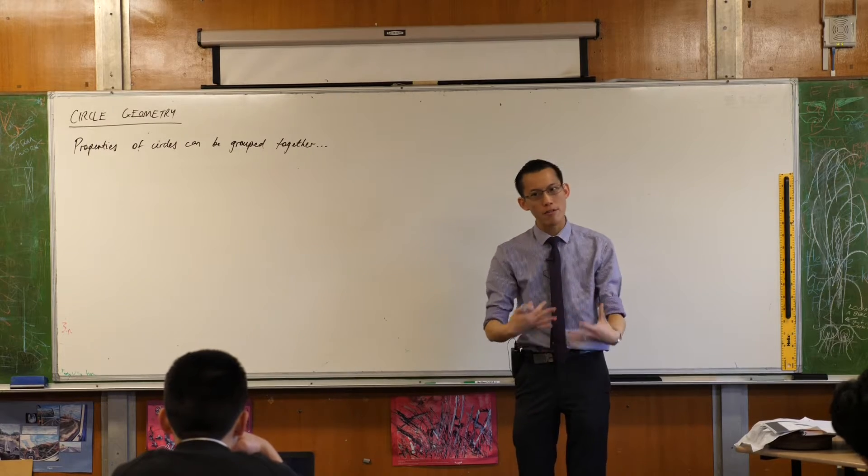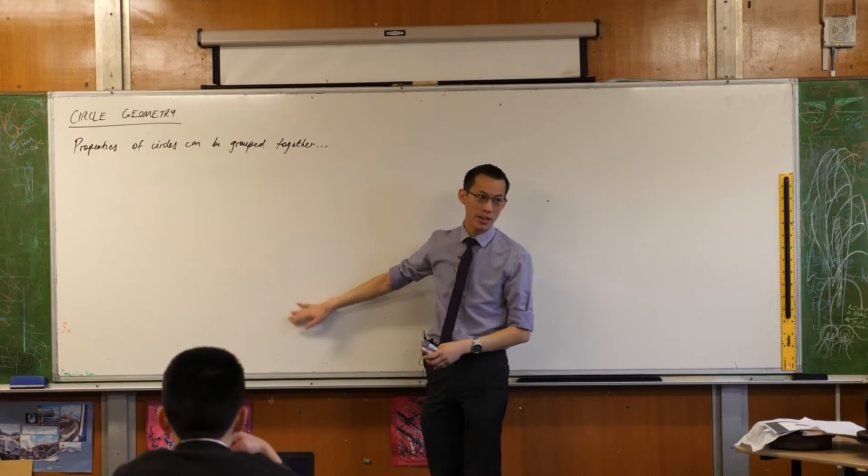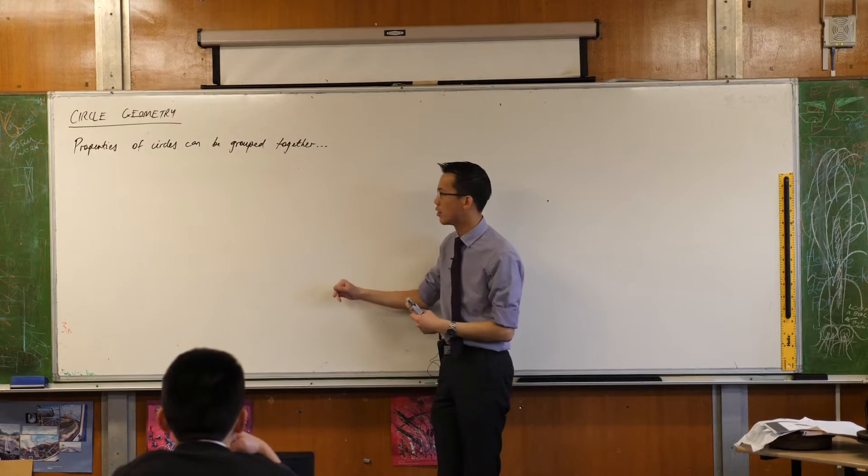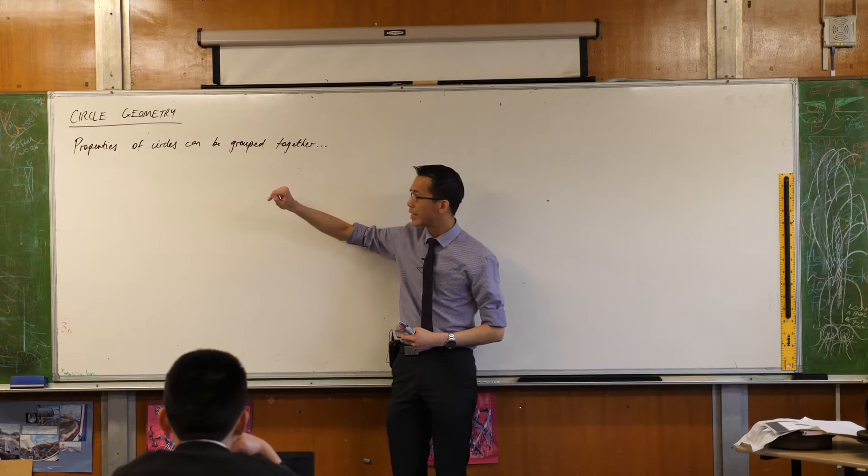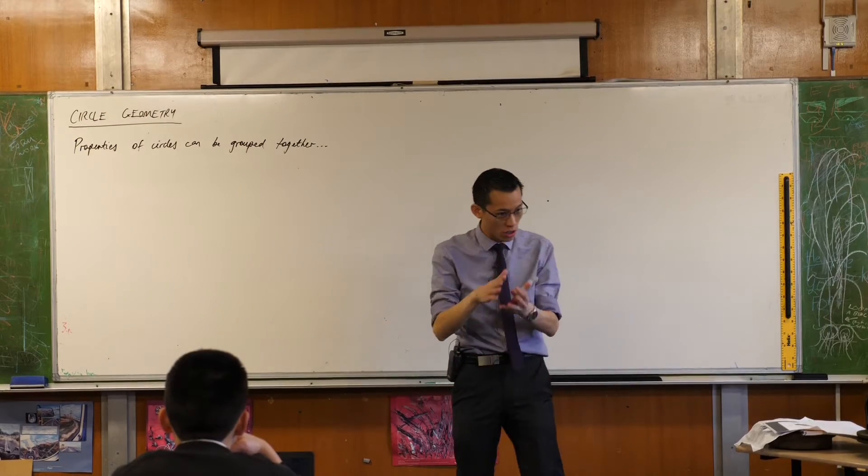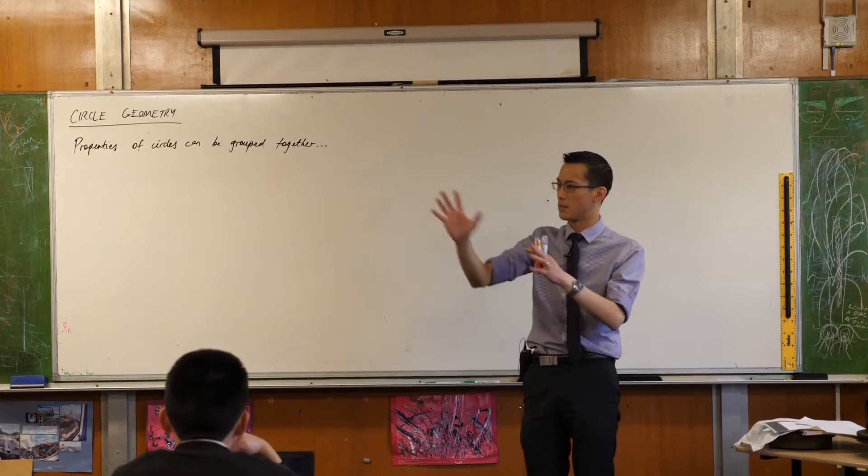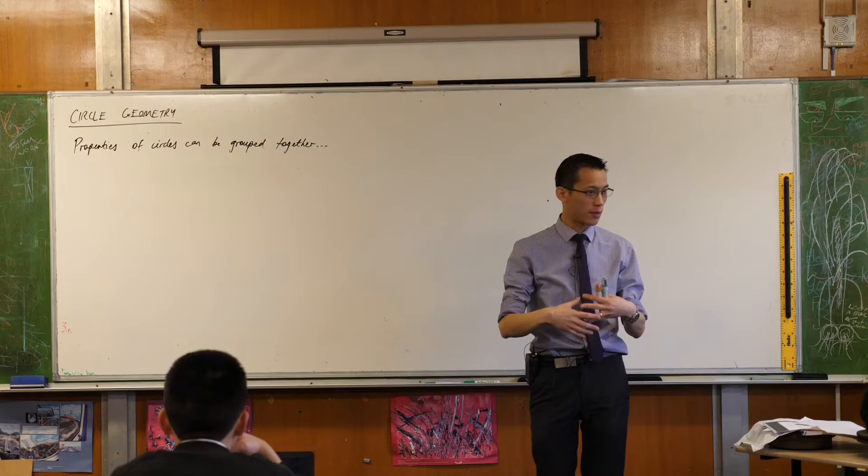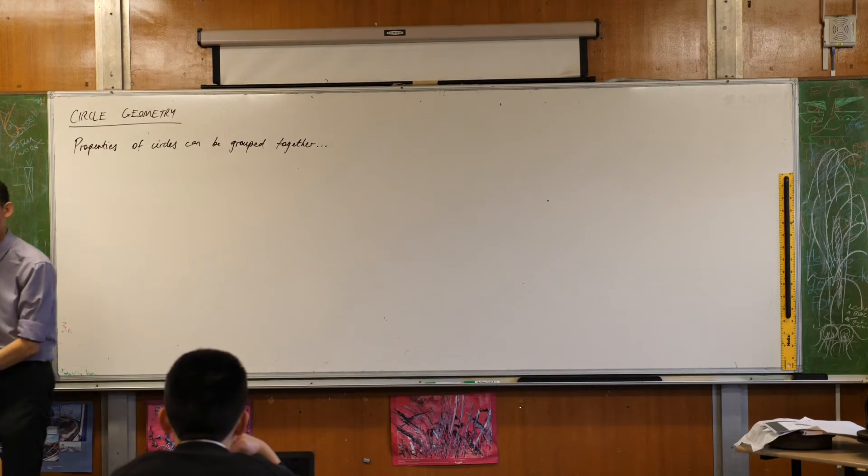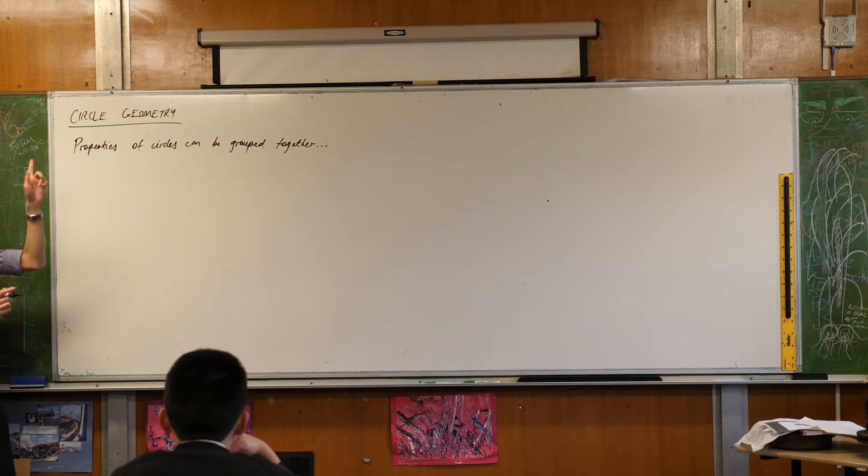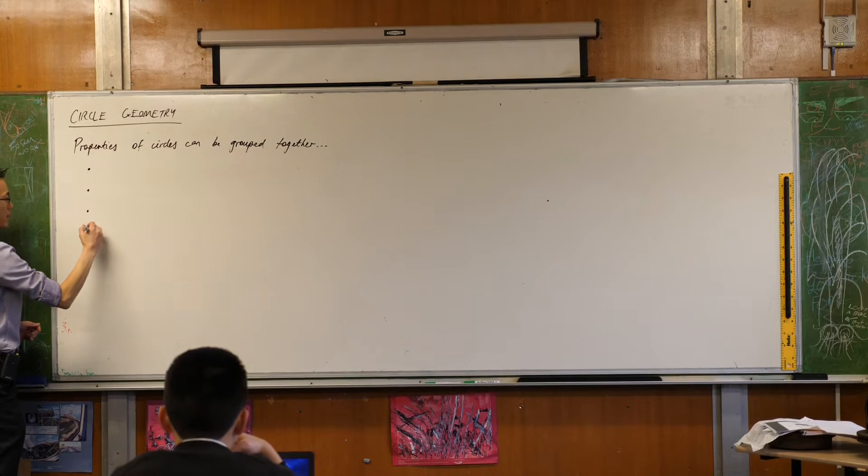To help you try and remember them, what I'm going to give you right at the get-go, we're going to spend like one and a half weeks on this, is I'm going to give you some groups into which the properties fall. So it's not just a list of 15 to 20 random separated things, but you can see them gathered into categories. Each of the categories is based on a feature of a circle.